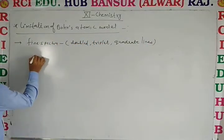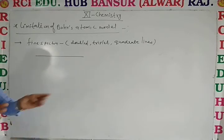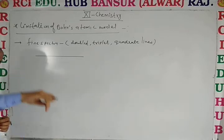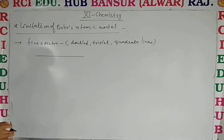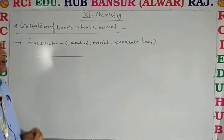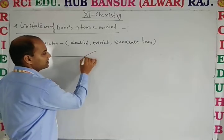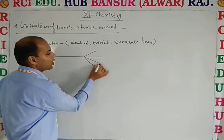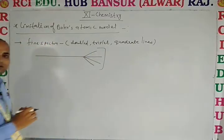These are the single lines of Bohr's atomic model. When scientists work on the Bohr atomic model, in spectrum, they explain that these lines also divide in different lines. This is the doublet, this is the triplet, this is the quadruplet.